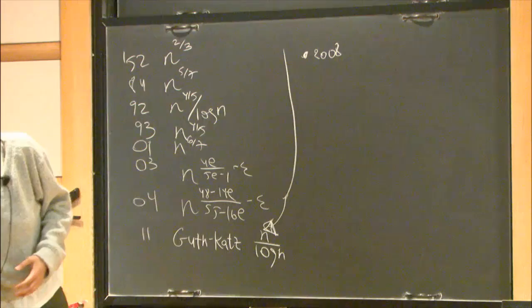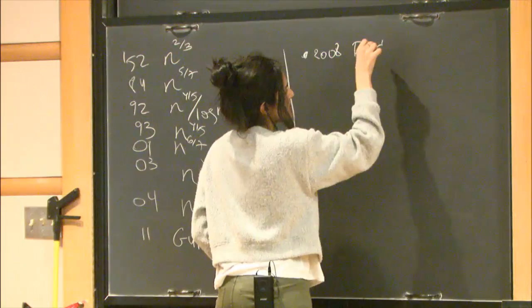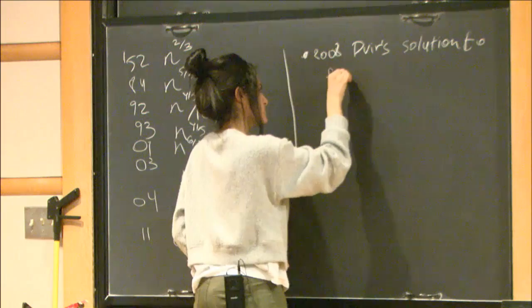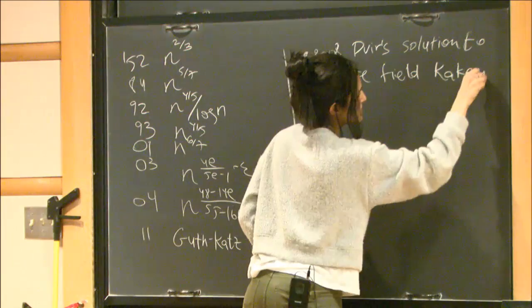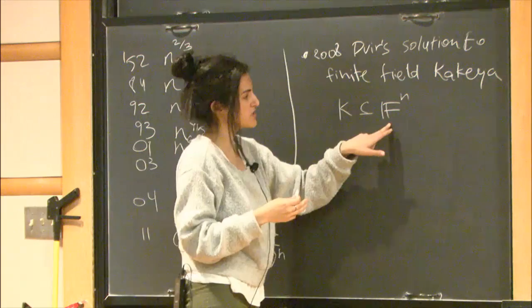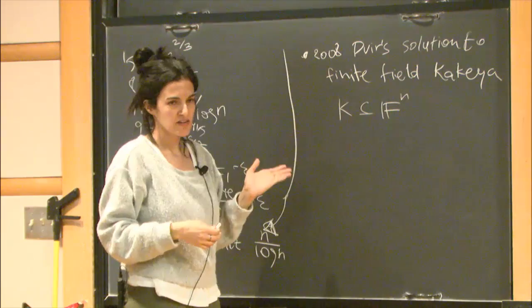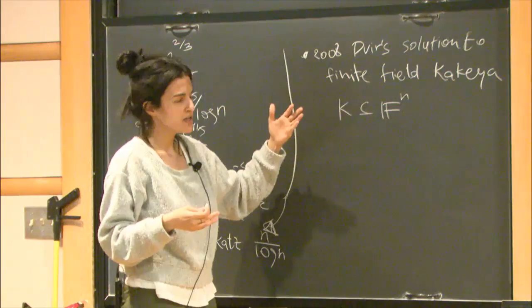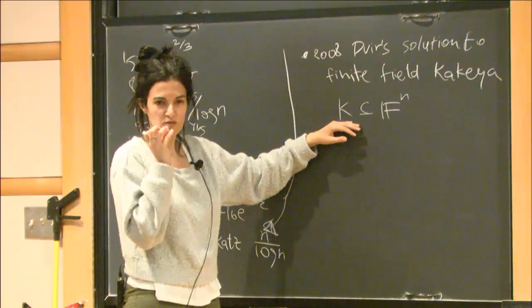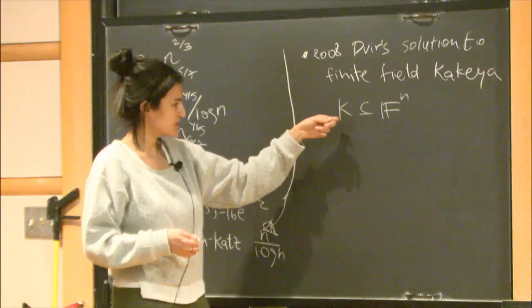One key precursor was Dvir's 2008 solution to the finite field Kakeya problem. A Kakeya set is a subset of F_q^n that contains a line in every direction. Dvir's idea: put all the points on the zero set of a polynomial. If the set is small, one can find a polynomial of relatively small degree. But if it contains a line in each direction, the polynomial must be identically zero — a contradiction — so the set must be large.